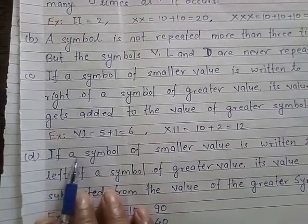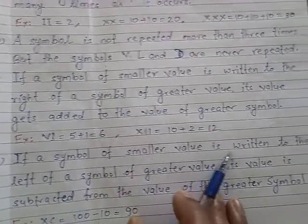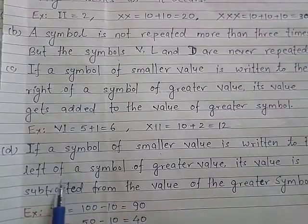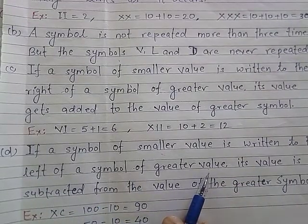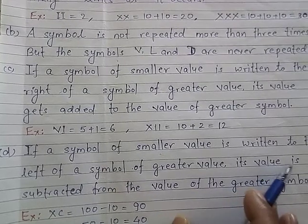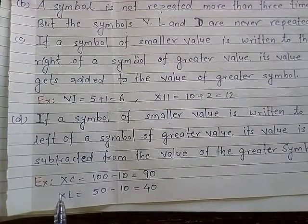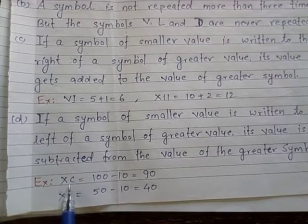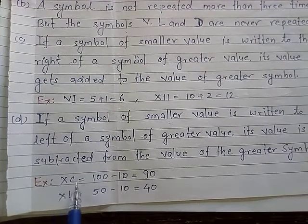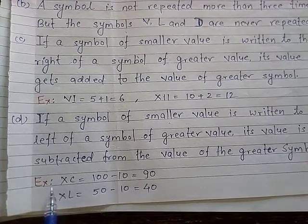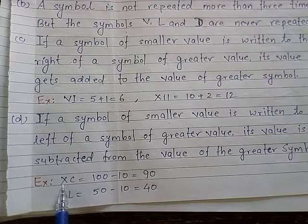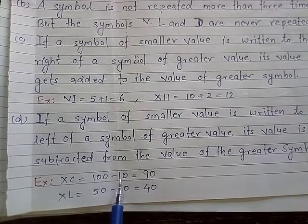Rule number 4: if a symbol of smaller value is written to the left of a symbol of greater value, its value is subtracted from the value of the greater symbol. For example, XC — X is 10, C is 100; since X is to the left of C, we subtract: 100 minus 10 equals 90.